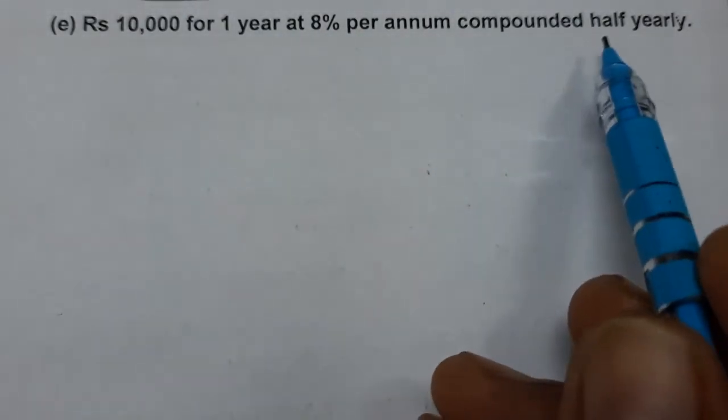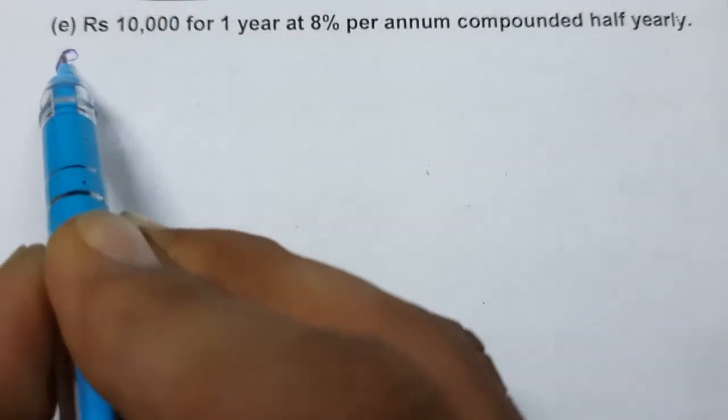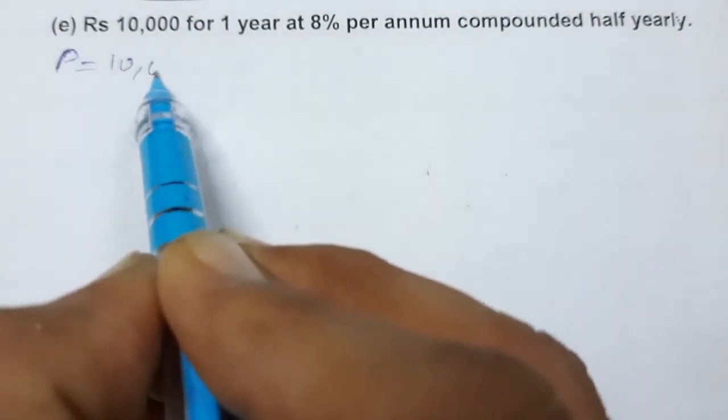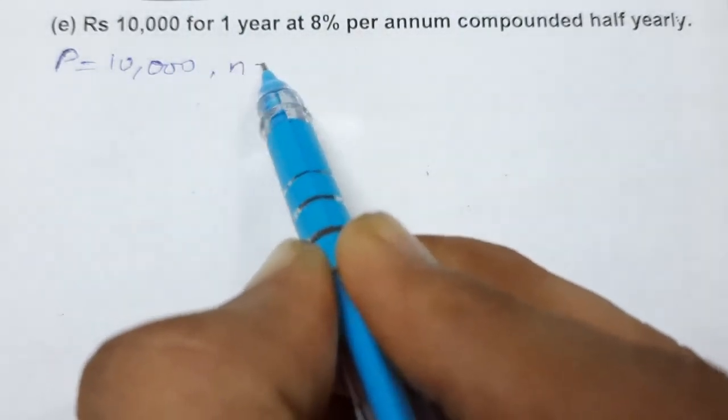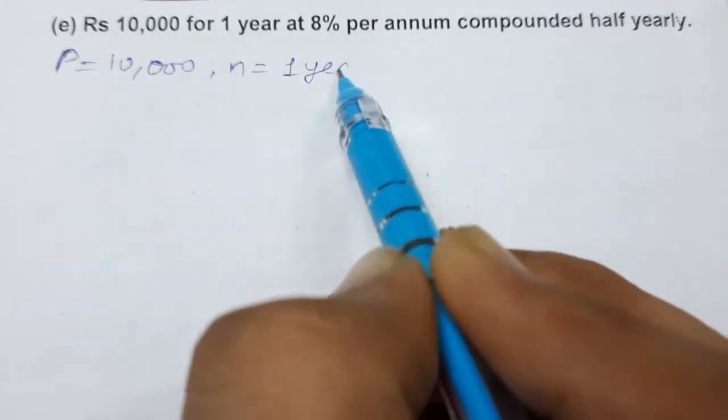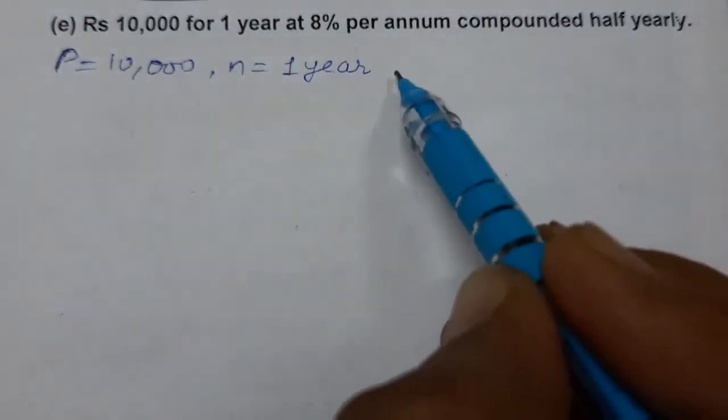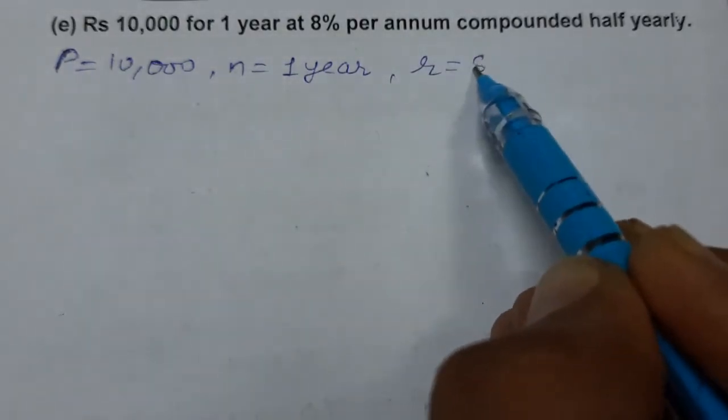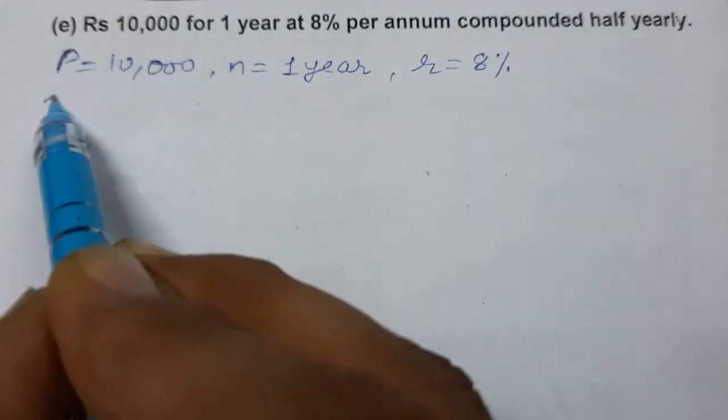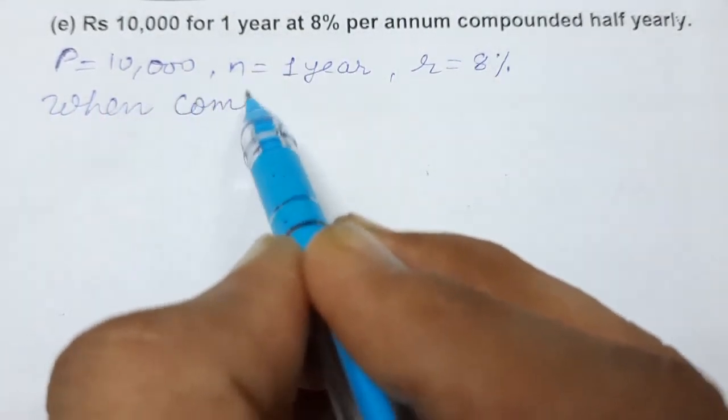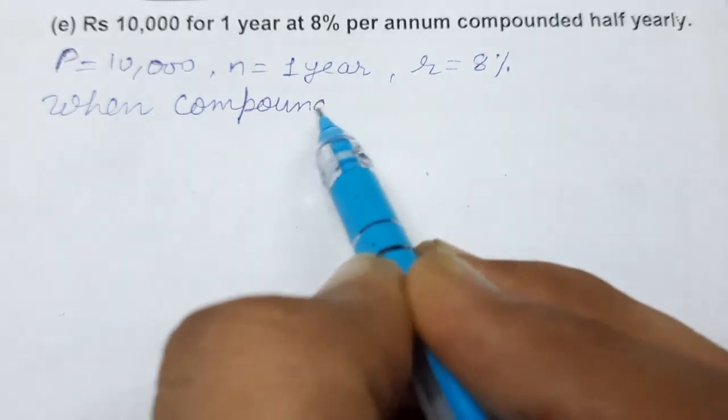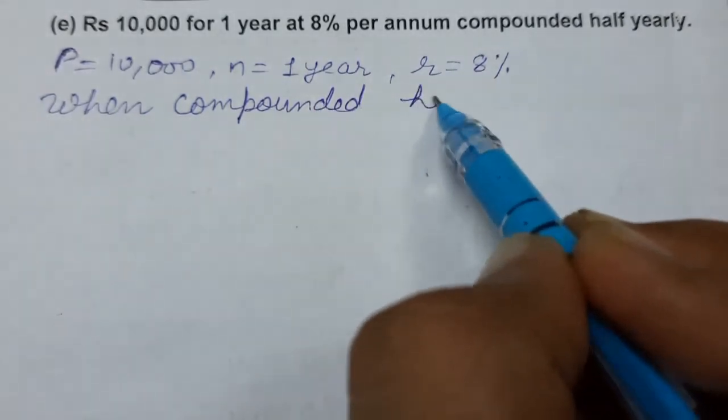Principal is given to us as 10,000, time is 1 year, and rate is given to us as 8% compounded half yearly. When compounded half yearly, we know the rate becomes half.